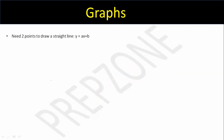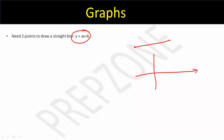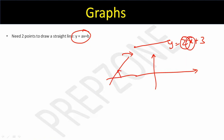To plot a straight line, you need two points. If you have two points, you can join them and plot the line. Consider y = 2x + 3. Slope is positive, so the angle from the positive x-axis is positive and the graph tilts accordingly. When x = 0, y = 3, so (0, 3) is one point.